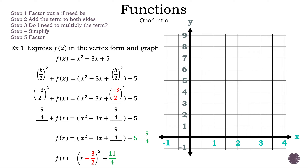Now we can factor x squared minus 3x plus 9 fourths to the quantity of x minus 3 halves squared, since we have a perfect square. And 5 minus 9 fourths is 11 fourths. So now we have f of x is equal to the quantity of x minus 3 halves squared plus 11 fourths. The minus 3 halves in the parentheses comes from b over 2. Now we have the quadratic function in vertex form.